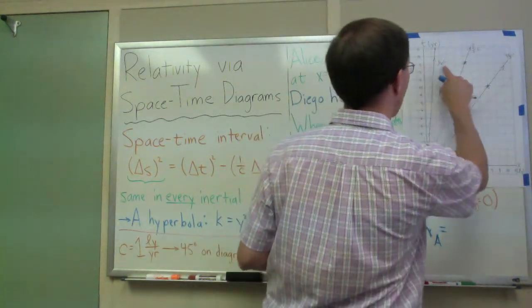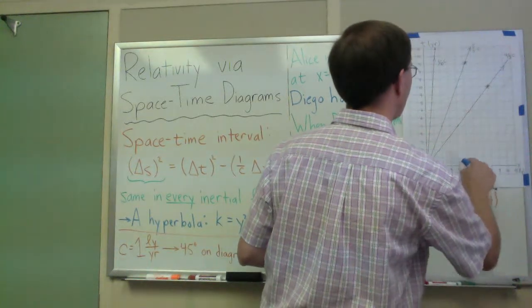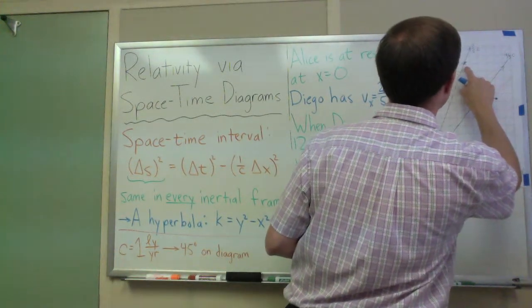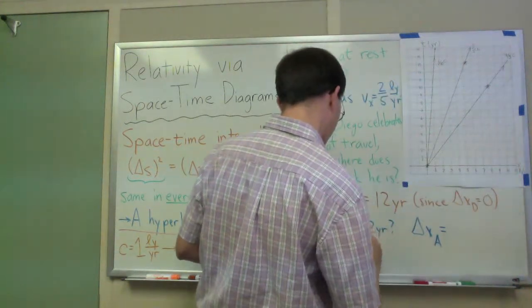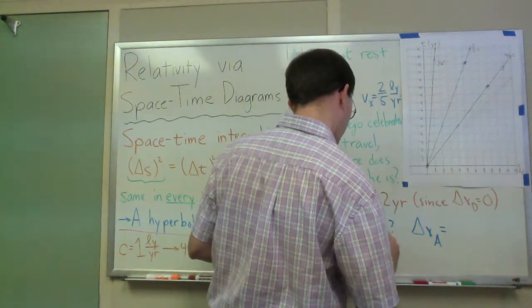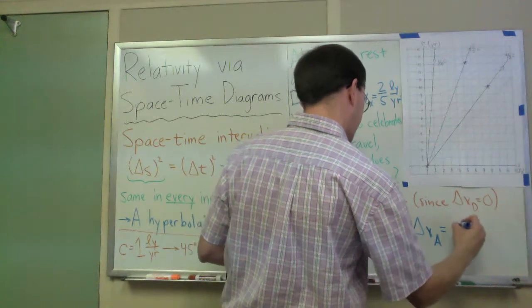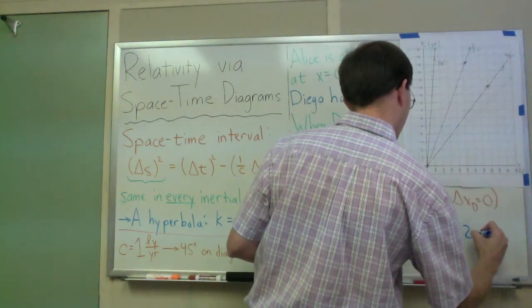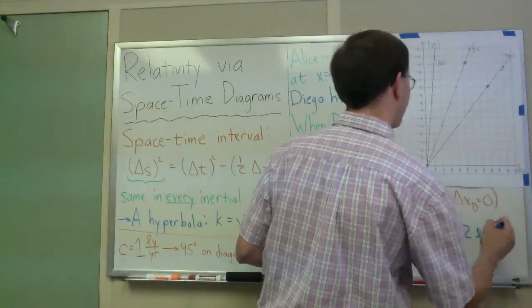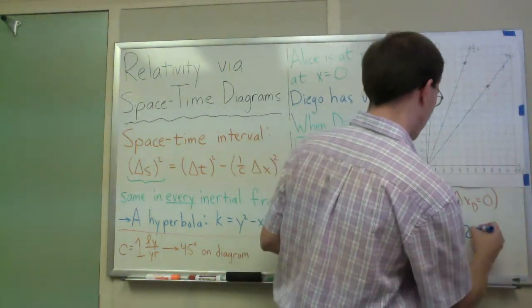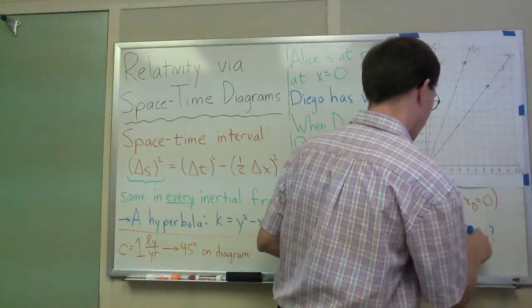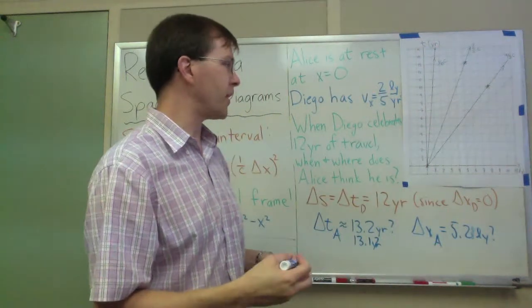And delta x Alice for that event. Alice's distance that she would read off is a little past five. Five, maybe I've underestimated that, thirteen point two, thirteen point one year. And this is going to be maybe five point two light years. Something in that neighborhood, five point two maybe. It's a little bit past five point two. We'll just leave it at five point two. That's what I read off of here.